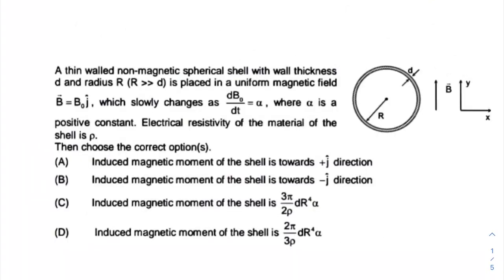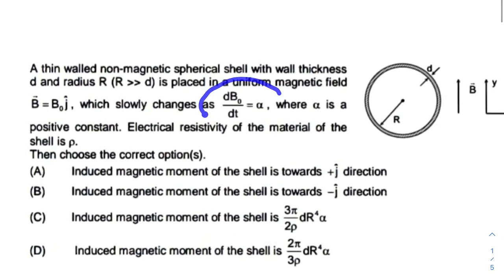In today's question we have a thin-walled non-magnetic spherical shell with wall thickness d and radius capital R, where R is very much greater than d. It is placed in a uniform magnetic field B naught j cap. So the magnetic field is directed towards the y-axis which slowly changes at a rate of alpha, where alpha is a positive constant. The electrical resistivity of the material of the shell is rho. We need to choose the correct option or options from all these four.